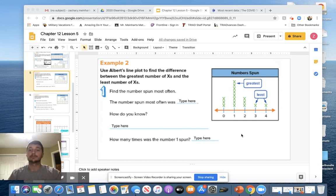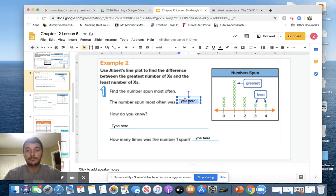So it says find the number spun most often. If we look right here, one has the greatest number of X's. So the number spun most often was... remember, double click... one.